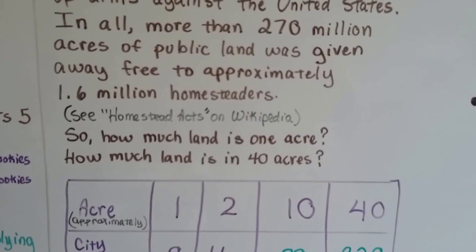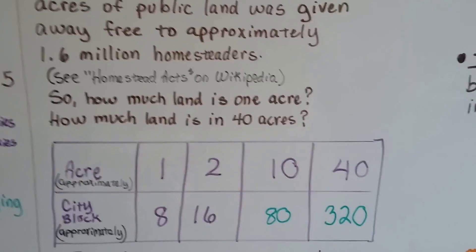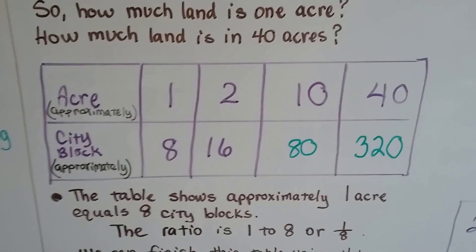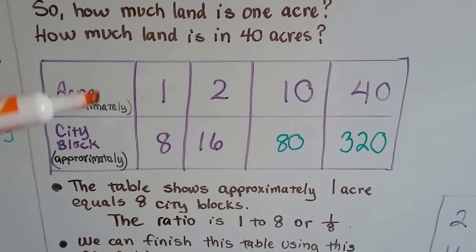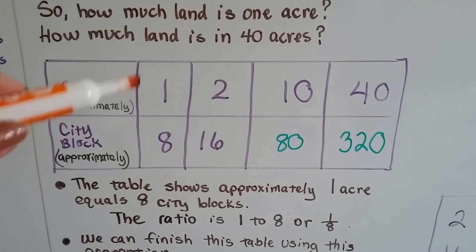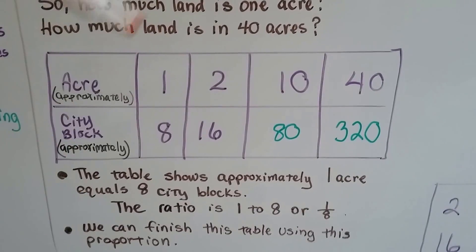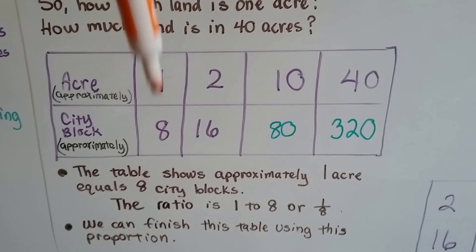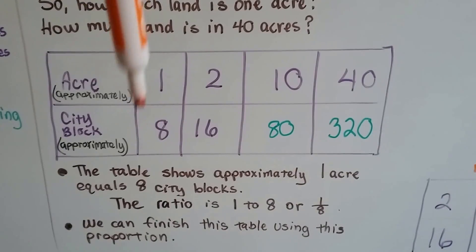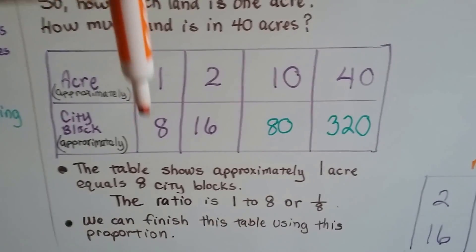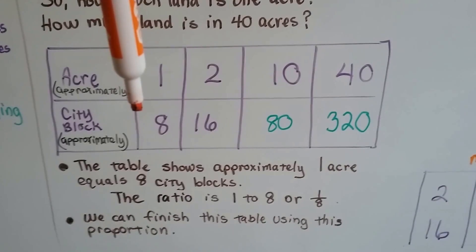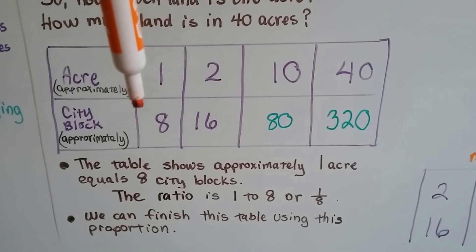So, how much land is 1 acre? How much is in 40 acres? Well, 1 acre is approximately 8 city blocks. Now, this isn't exact. These are just approximate numbers. The table shows approximately 1 acre equals 8 city blocks, so the ratio is 1 to 8, or 1 eighth. And we can finish this table using that proportion.